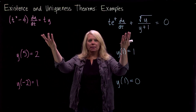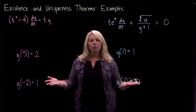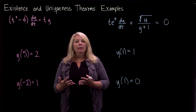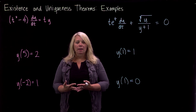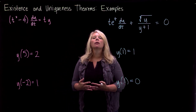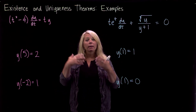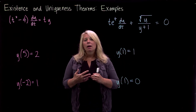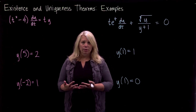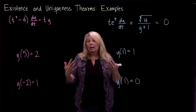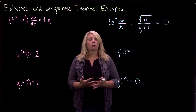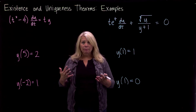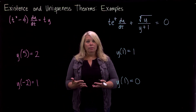We have two differential equations here with some different initial conditions for each of those. What we're going to look at is using the existence and uniqueness theorems that we've talked about so far in the first chapter, trying to determine whether each of these differential equations with the specific initial conditions given are guaranteed to have a solution or not. And if they are guaranteed to have a solution, whether we know that solution is going to be unique and, if possible, on what interval those guarantees hold.